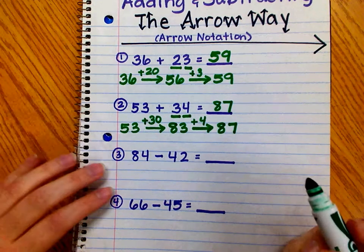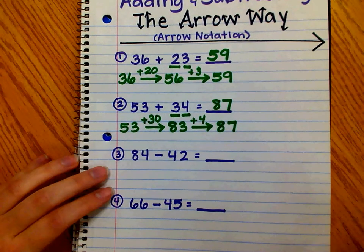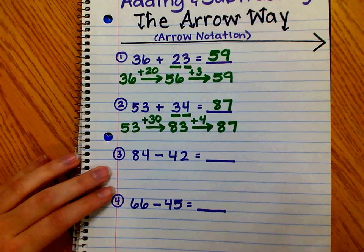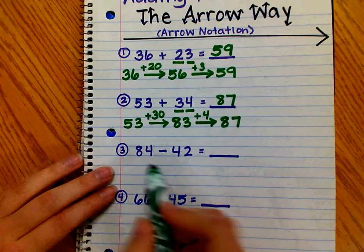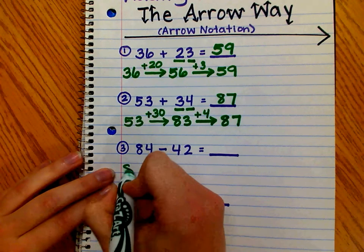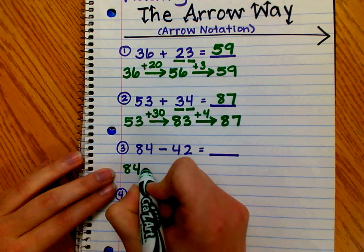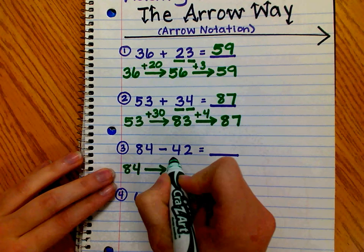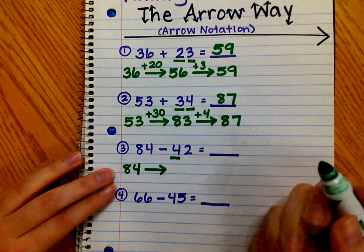We use the same strategy even when we subtract. We first subtract the tens, and then we subtract the ones. We start with 84. We draw our arrow, and we are subtracting 4 tens.